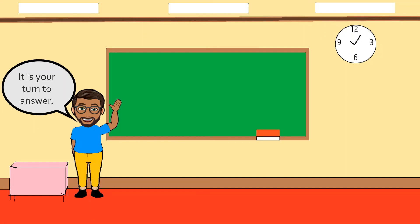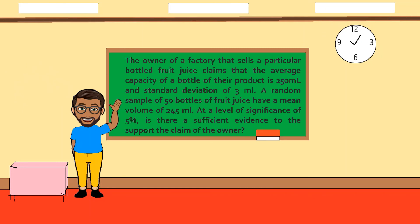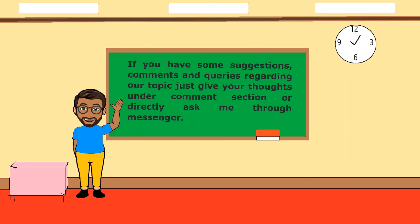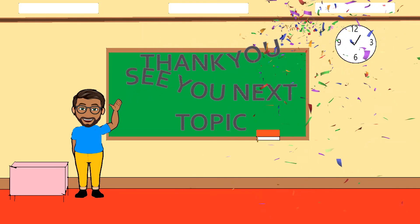Now it is your turn. Determine the rejection region of the following problem: The owner of a factory that sells a particular bottle of fruit juice claims that the average capacity of a bottle is 250 ml with a standard deviation of 3 ml. A random sample of 50 bottles has a mean volume of 245 ml. At a level of significance of 5 percent, is there sufficient evidence to support the claim of the owner? If you have suggestions, comments, or queries, please leave them in the comment section or message me directly. Thank you, see you in the next topic.